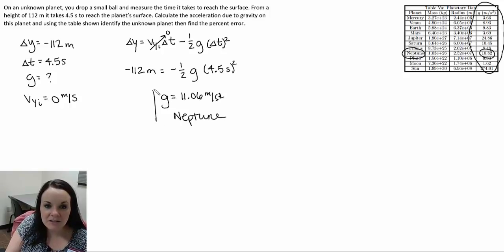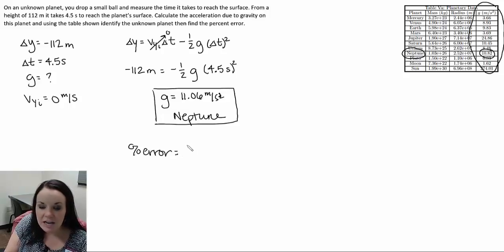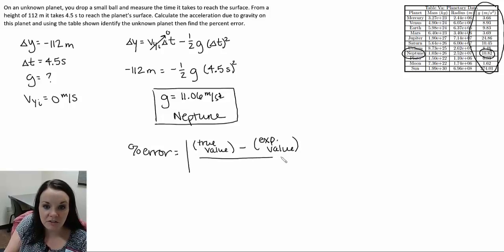The percent error equation can be found in your notes or online. It's the true value, sometimes called the theoretical value, minus the experimental value, which is what we just found. That's usually what we calculate or measure given our values, divided by the true value or theoretical value.